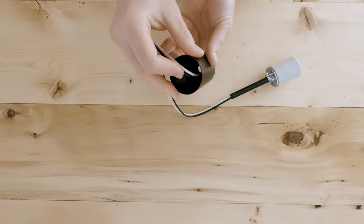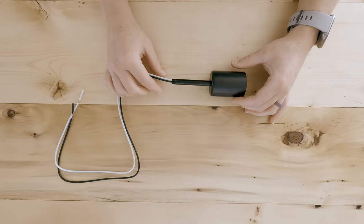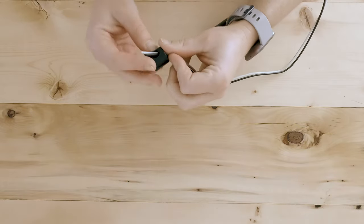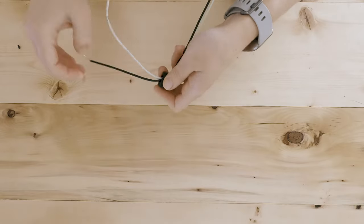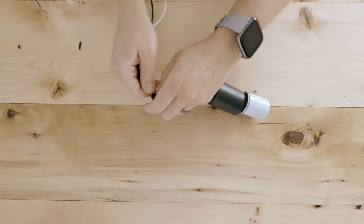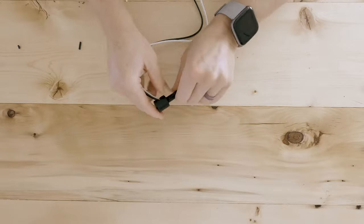Next, take the socket cup and feed it through the wire until it rests on top of the light socket so that it hides the white porcelain. Take a straight arm back and feed the wire through the holes of this fitting. Tighten the fitting onto the 3 inch pipe.